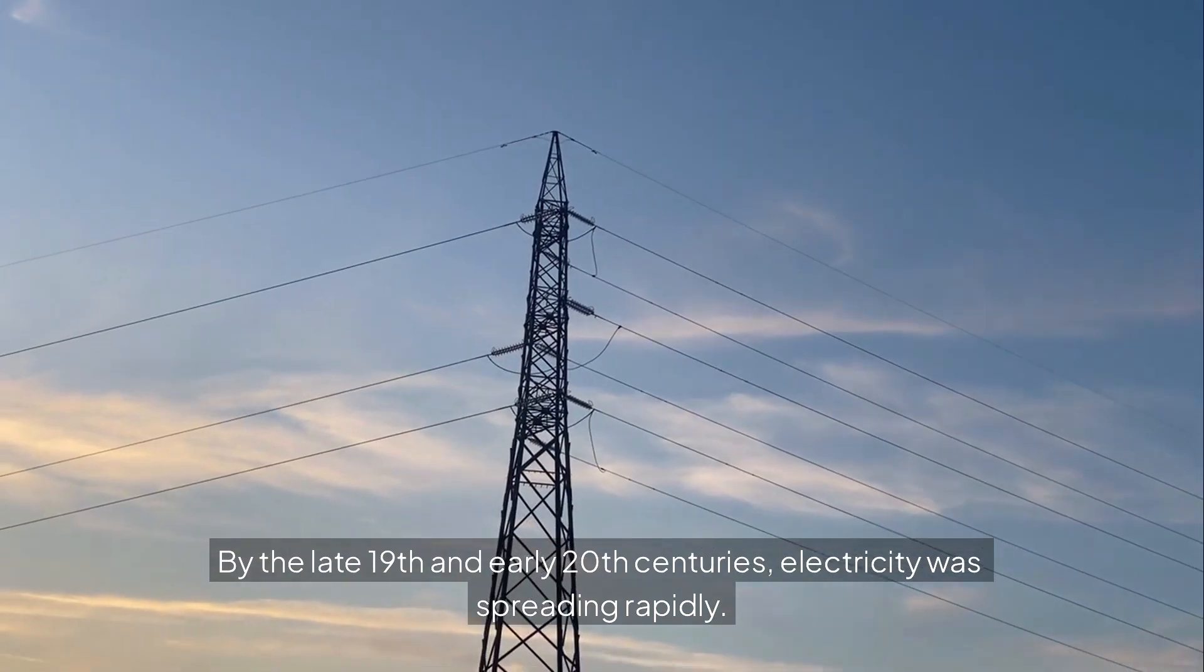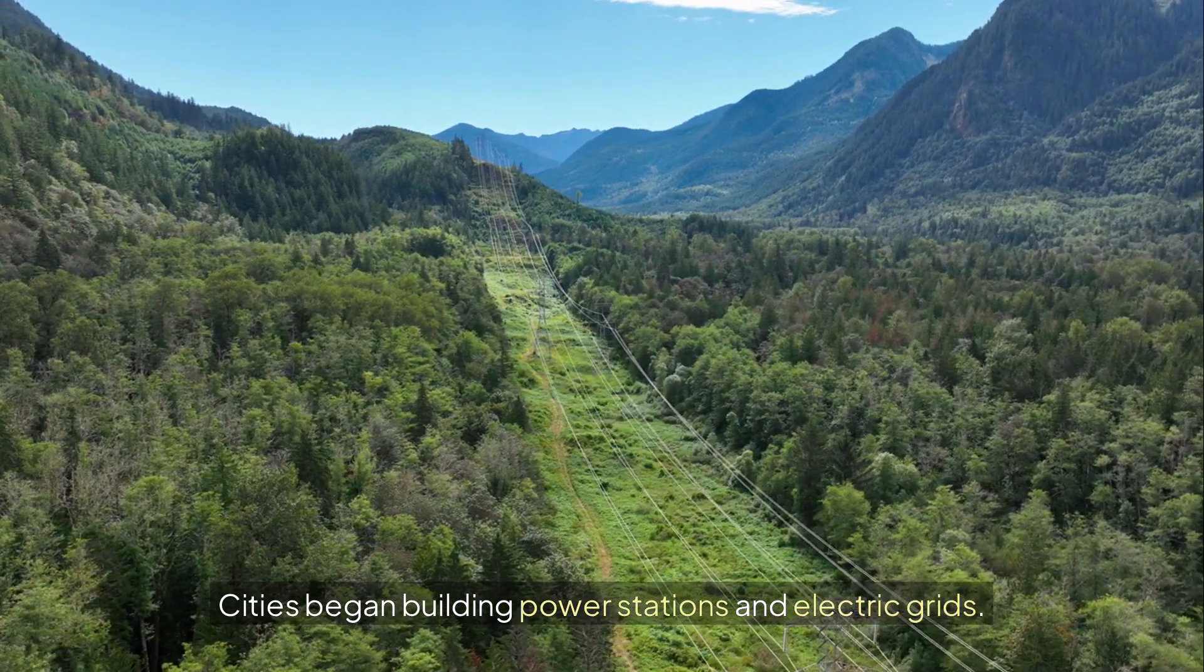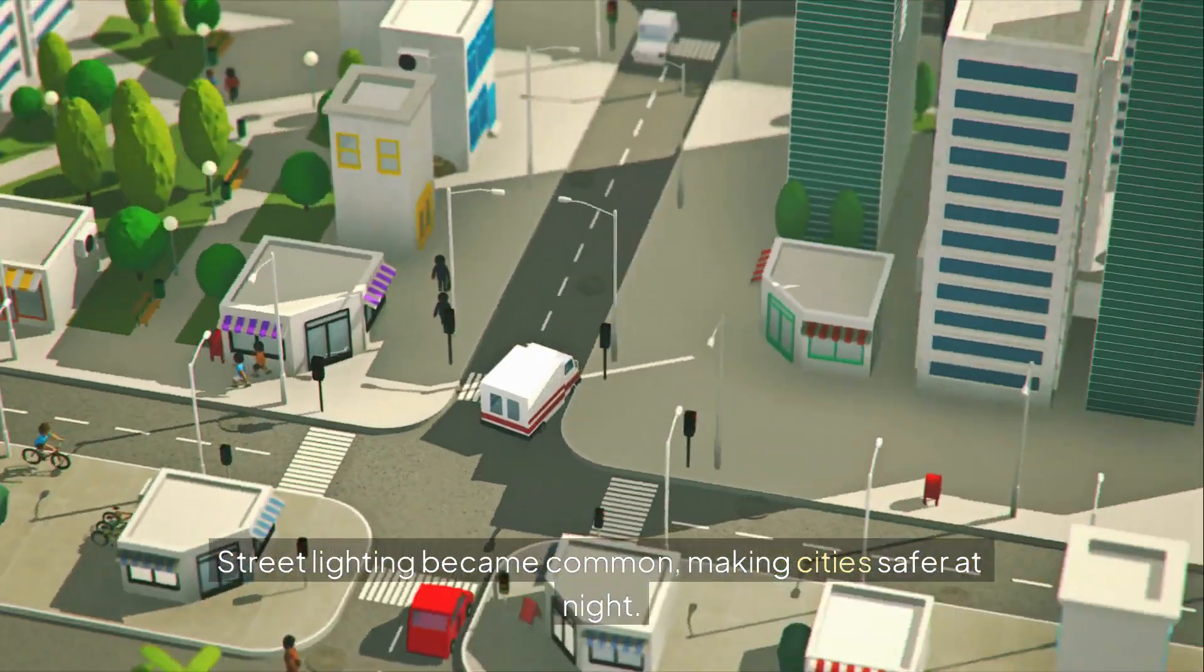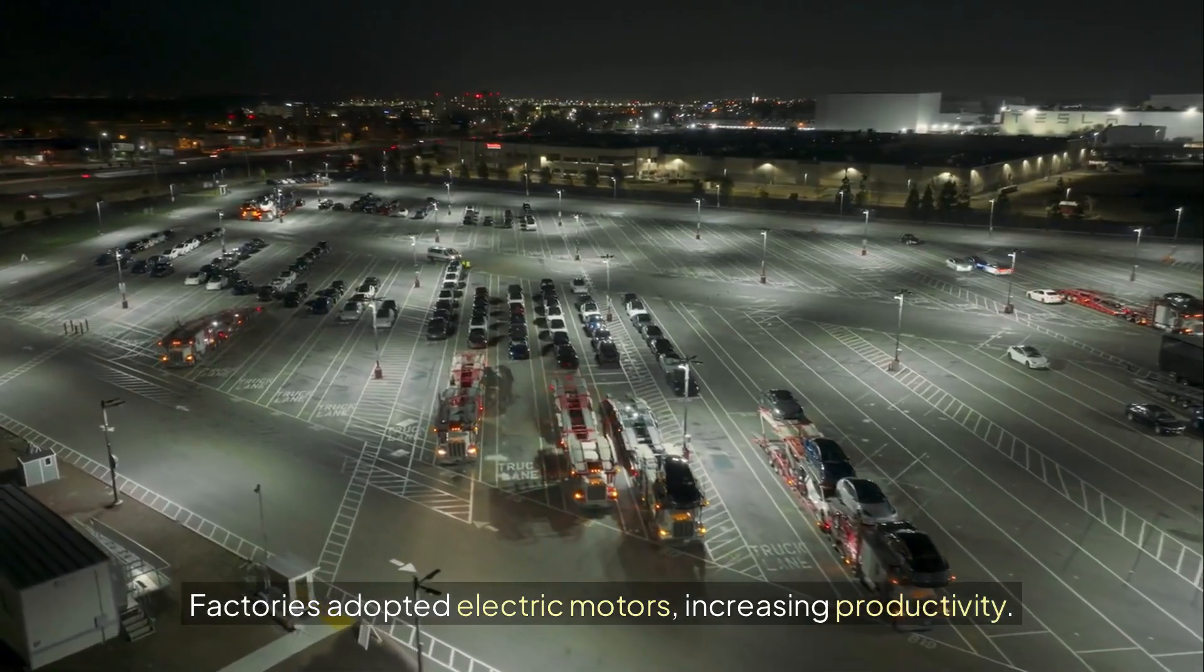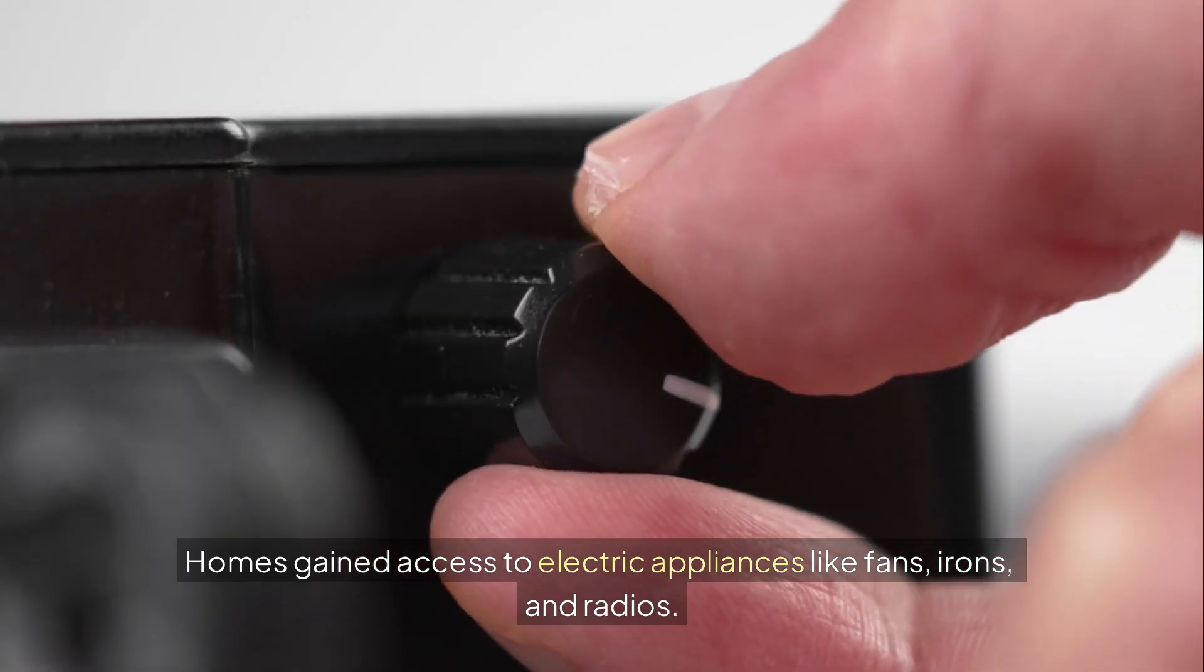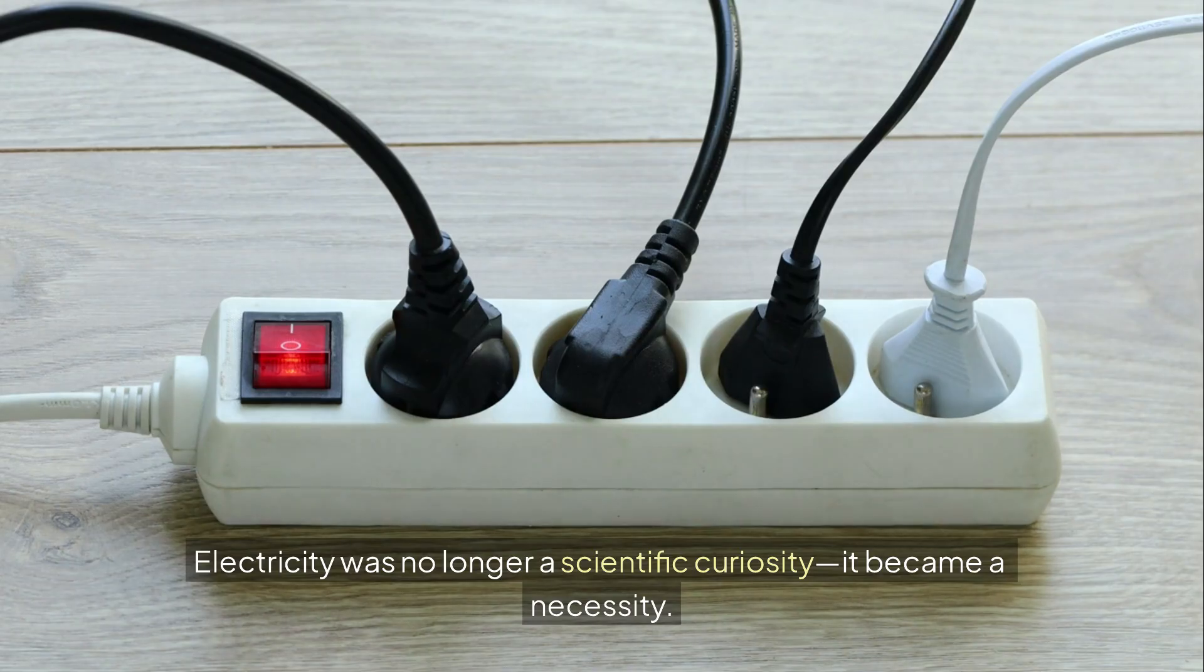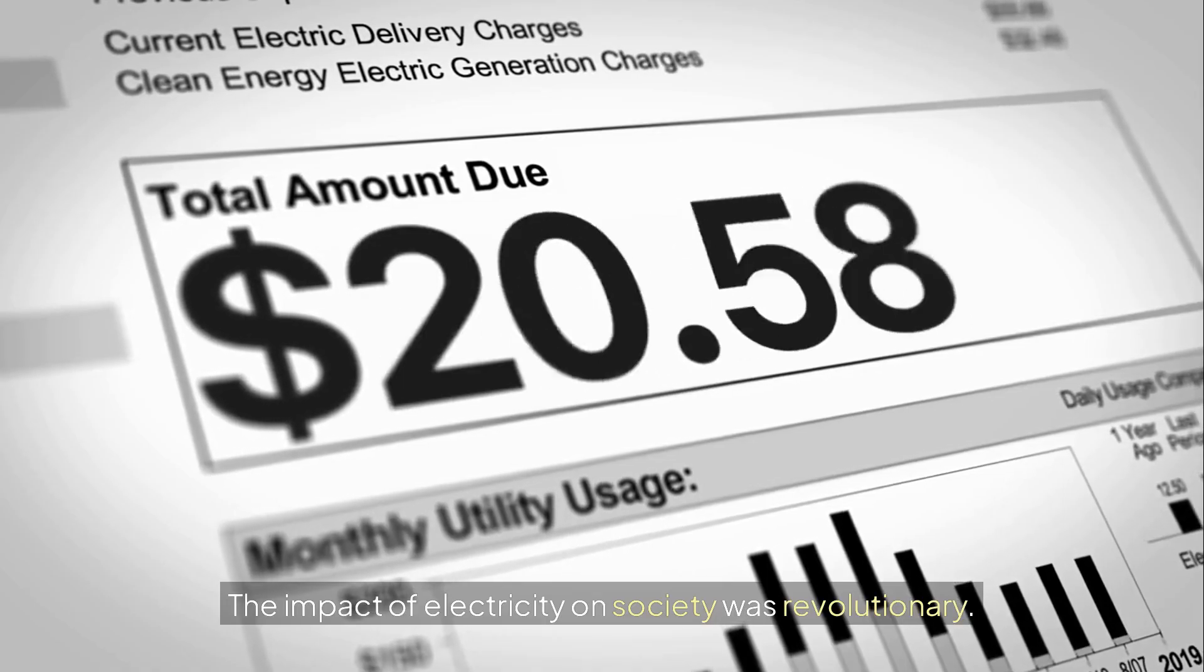By the late 19th and early 20th centuries, electricity was spreading rapidly. Cities began building power stations and electric grids. Street lighting became common, making cities safer at night. Factories adopted electric motors, increasing productivity. Homes gained access to electric appliances like fans, irons, and radios. Electricity was no longer a scientific curiosity, it became a necessity.